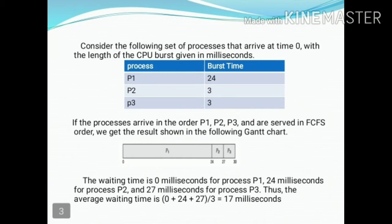P1 arrives first, so its waiting time is zero. P2 is the second process. Since P1 executes first for 24 ms, P2 must wait for 24 ms. So the waiting time of P2 is 24 ms — the CPU completes P1 in 24 ms before P2 can execute.